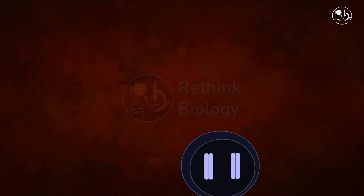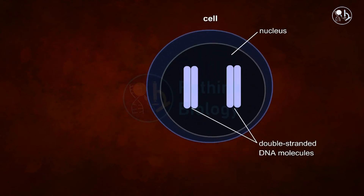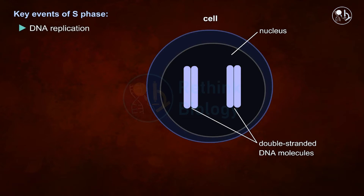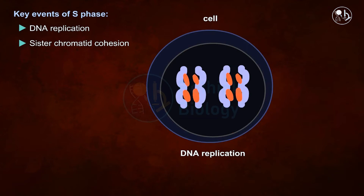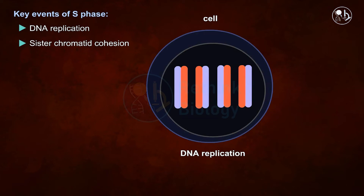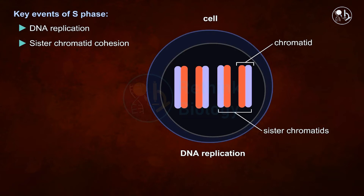Prior to any cell division, all of the DNA must be replicated, which occurs in the synthesis phase or S phase. In the synthesis phase, two key events occur: the first is DNA replication and the second is sister chromatid cohesion. Each DNA molecule gets duplicated by the cellular DNA replication machinery. During replication, each newly formed DNA molecule is called a chromatid, and when those duplicated DNA molecules are in pairs, they are called sister chromatids.